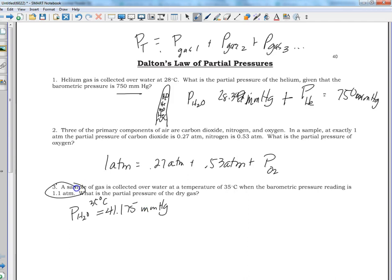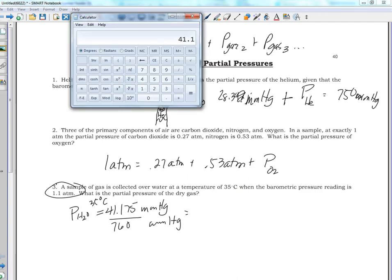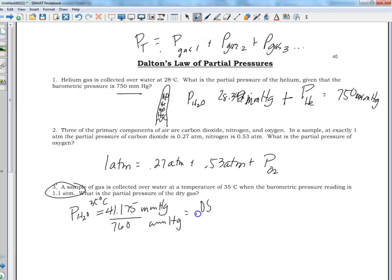Now, is this in millimeters? No. So this needs to be changed to atmospheres. To do that, we divide by 760 because there are 760 millimeters of mercury to every one atmosphere. 41.175 divided by 760 gives us 0.0542 atmospheres for the pressure of the water.